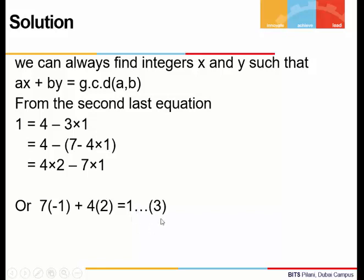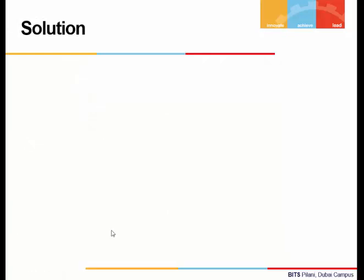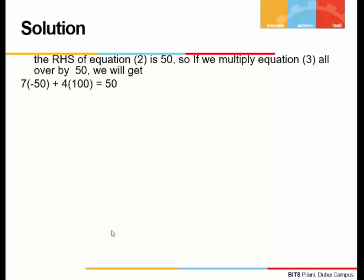So what if we multiply equation 3 by 50 all over? We will get 7×(-50) + 4×100 = 50.